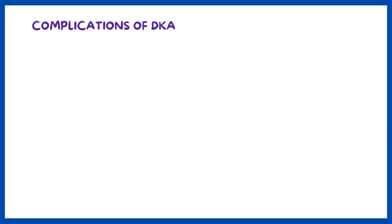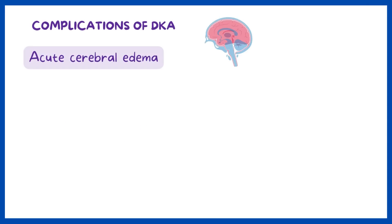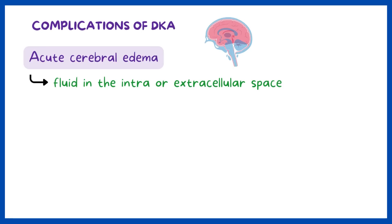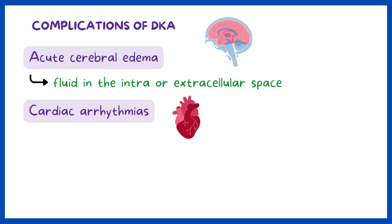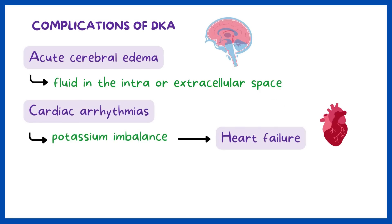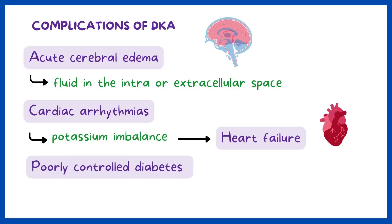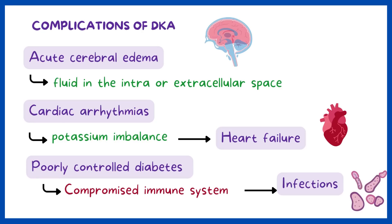Complications of DKA include acute cerebral edema, which is when there's too much fluid in the intra- or extracellular space. Other complications include cardiac arrhythmias due to potassium imbalance, which can lead to heart failure. Finally, since people with DKA have poorly controlled diabetes, their immune system is also likely to be compromised, making them more vulnerable to common infections like candida.